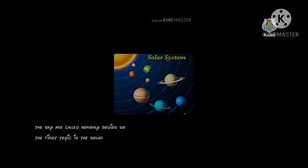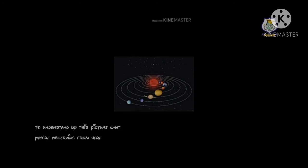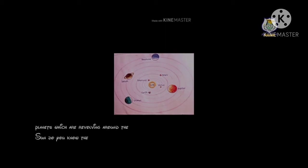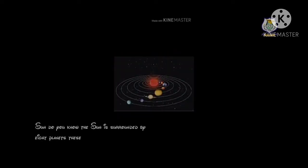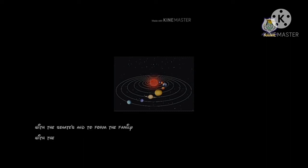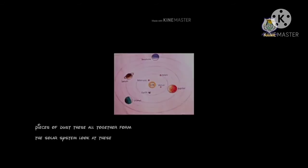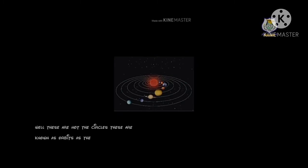The first topic is the solar system. Try to understand what the solar system is by this picture. You see the sun in the center and the planets revolving around the sun. The sun is surrounded by eight planets. These eight planets along with the sun, its satellites, and asteroids — pieces of rocks and dust — together form the solar system. The paths the planets move in around the sun are fixed paths called orbits.